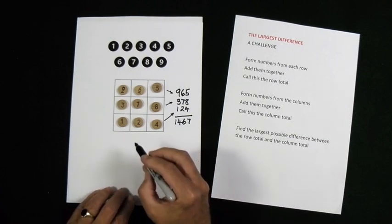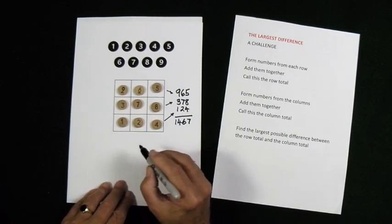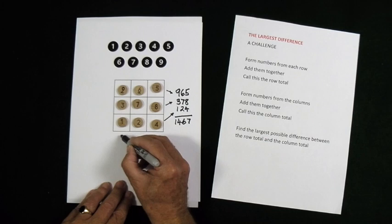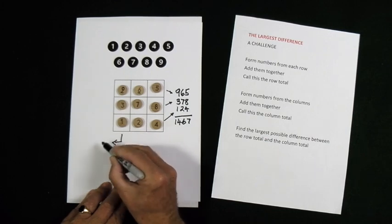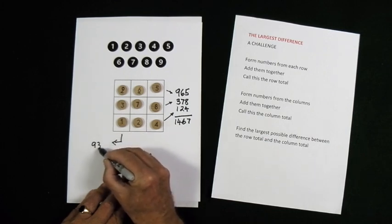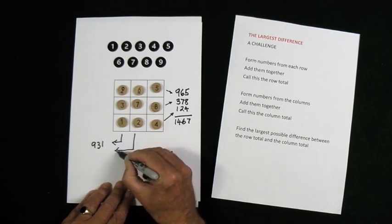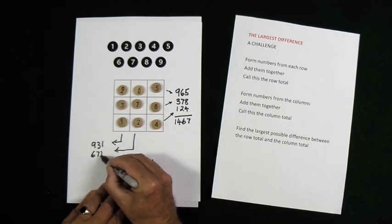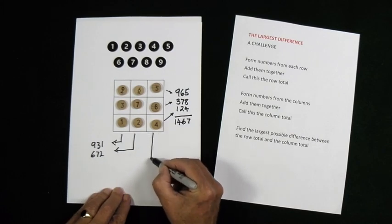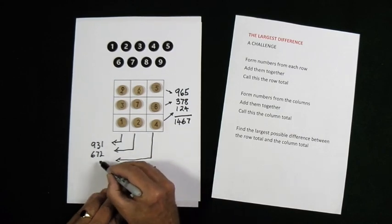I'm going to form another three numbers, and this time I'm going to form them from the columns. Nine hundred and thirty-one, six hundred and seventy-two, and finally, five hundred and eighty-four.